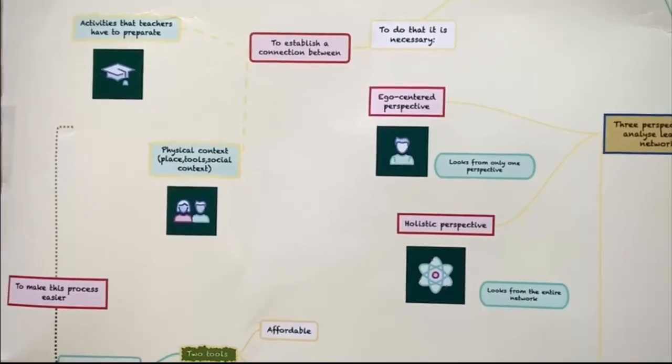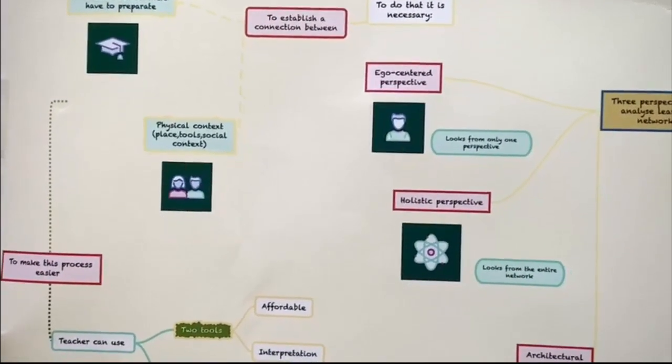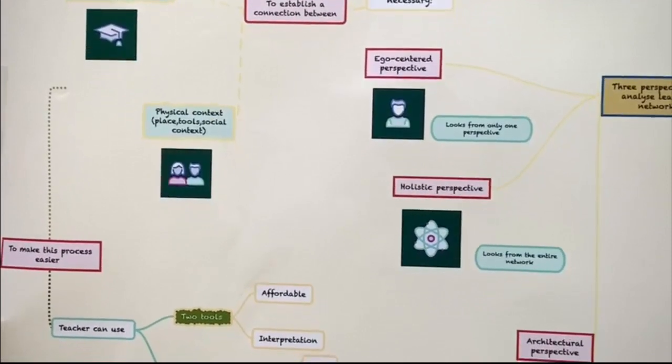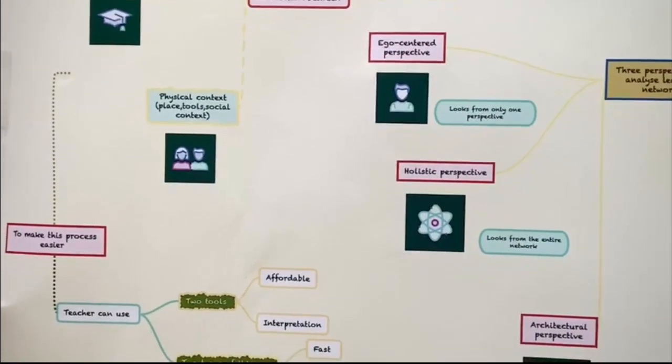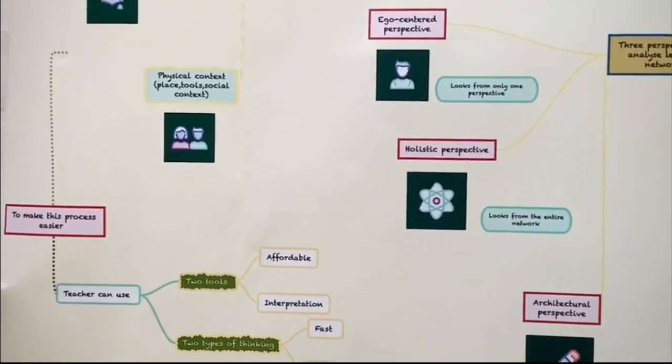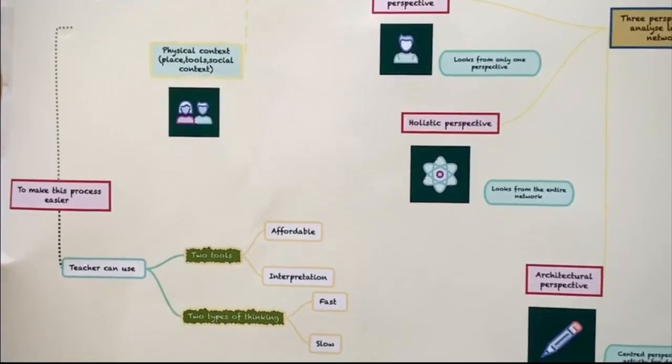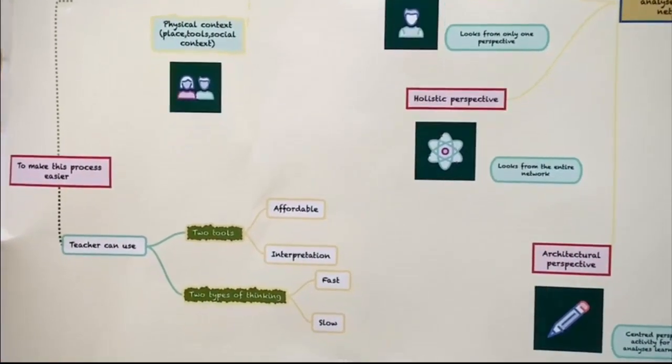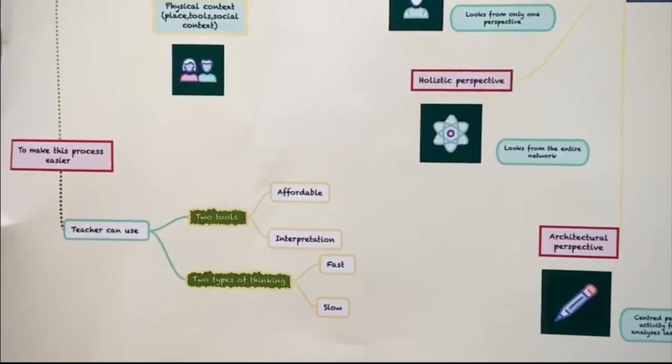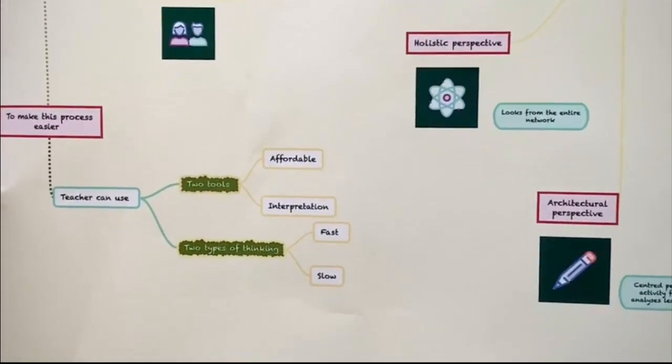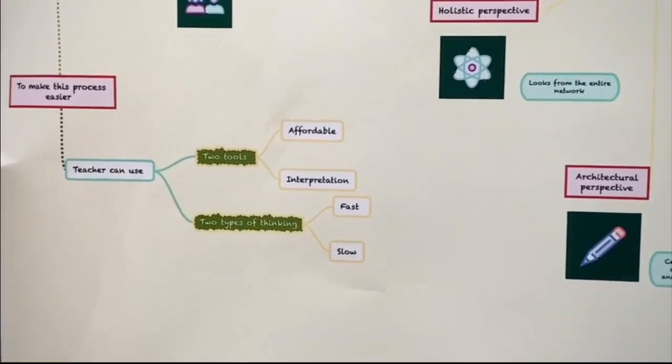The relationship between place, school and activities are a very important endeavor that teachers must do, but in many cases this is a very complex activity. To do this, teachers can use two processes to make it easier: affordance and interpretation, and also it can be taken into account two types of thinking, fast and slow thinking.